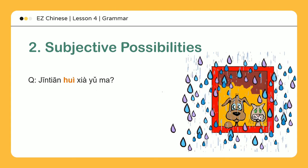Subjective possibilities — 下雨. 今天会下雨吗? — Will it rain today? 觉得: 我觉得会下雨 — Feel. I think it will rain.